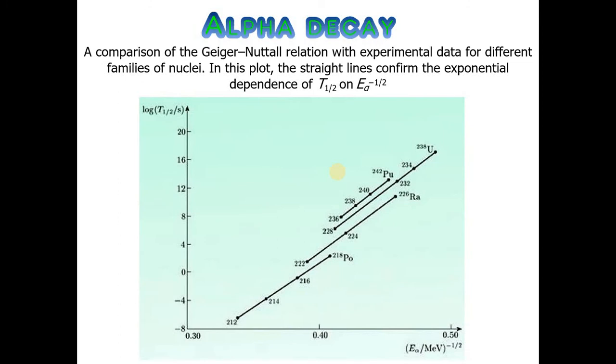It's a comparison of Geiger-Nuttall relation with experimental data for different families of nuclei. In this plot, the straight lines confirm the exponential dependence of half-life on energy. We have different families of nuclei like radium, uranium, and polonium.